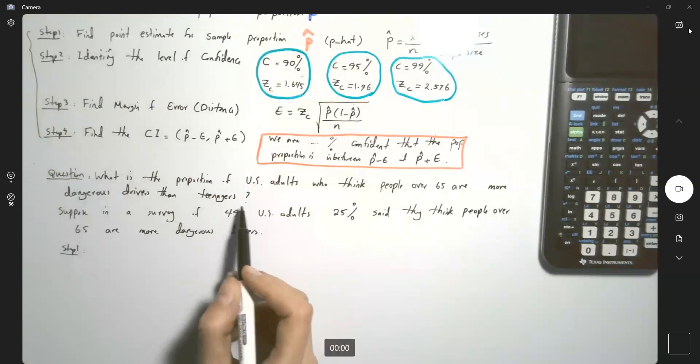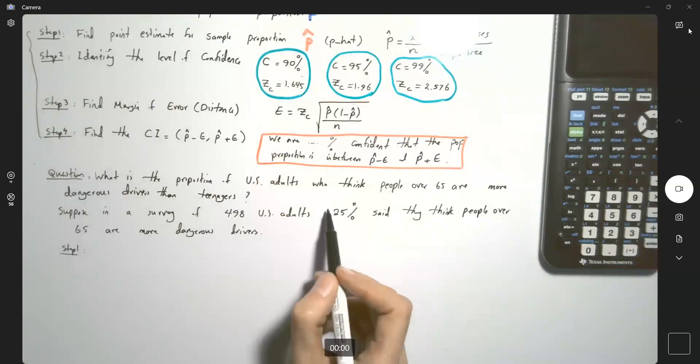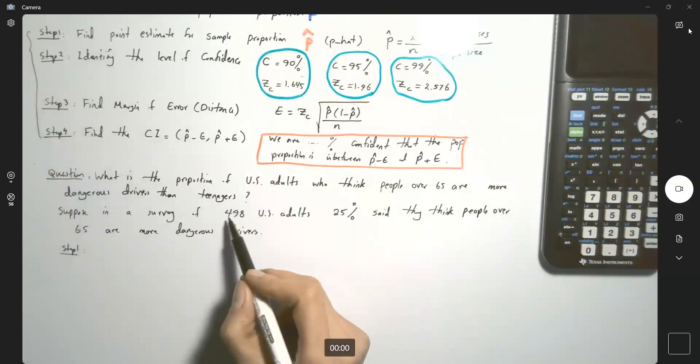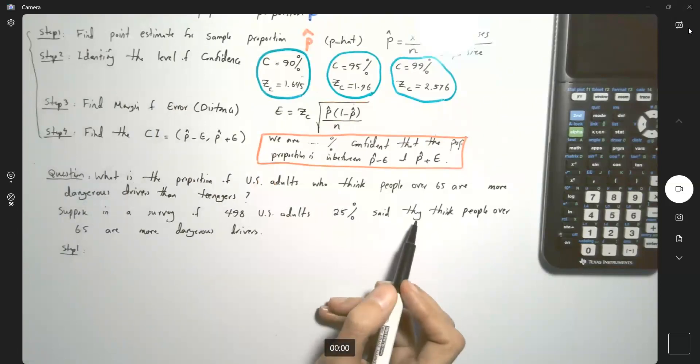but I don't know how many said yes. But I don't need that, because I have 25 percent of 498 already said they think people over 65 are more dangerous drivers. So,